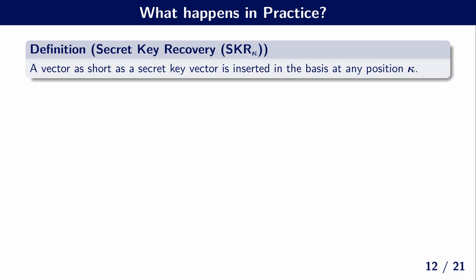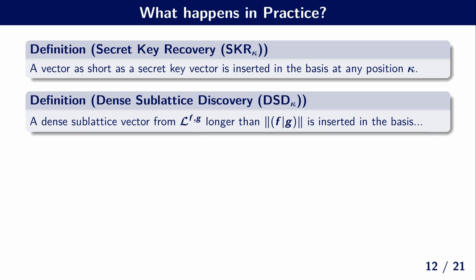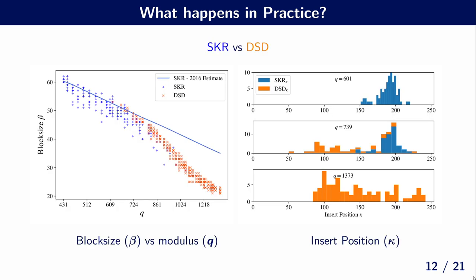Given that we want to understand how and when BKZ solves the NTRU problem, let's first see what happens in practice. To run experiments, we define two events. First, the secret key recovery (SKR) event at position kappa, which triggers when a vector as short as the secret key — or any rotation — is inserted in the basis at position kappa during BKZ. Second, the dense sub-lattice discovery (DSD) event, which triggers if a dense sub-lattice vector from the sub-lattice generated by the secret key is inserted in the basis at position kappa. We ran BKZ on the NTRU lattice with N equal to 127 for different moduli Q. In the under-stretched regime, we mostly see SKR events, while in the over-stretched regime, we mostly see DSD events.